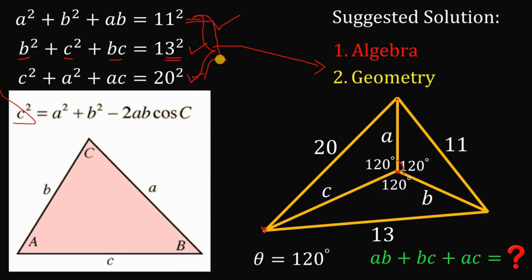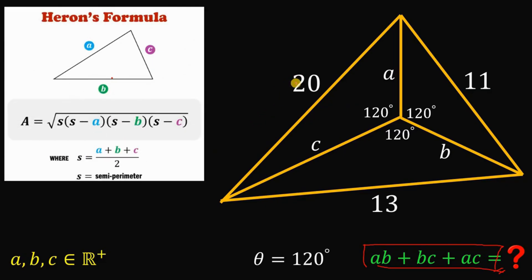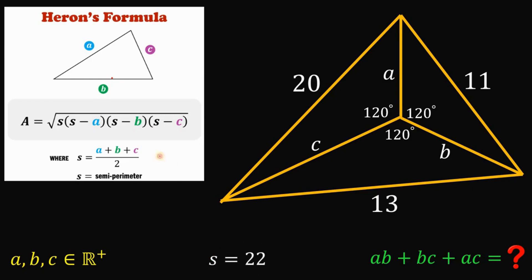So this algebraic question can be converted into this geometric problem. We focus on the big triangle with sides 11, 13, and 20. To find the area of this triangle using its sides, we use Heron's formula: Area equals the square root of S times (S minus a) times (S minus b) times (S minus c), where S is the semi-perimeter. The semi-perimeter S equals (20 plus 11 plus 13) divided by 2, which is 44 divided by 2, giving us 22.